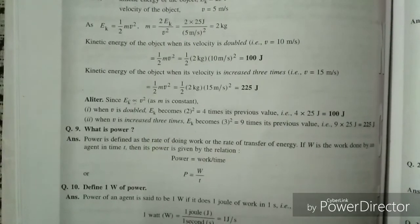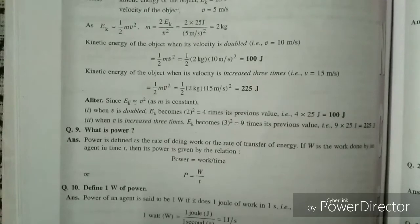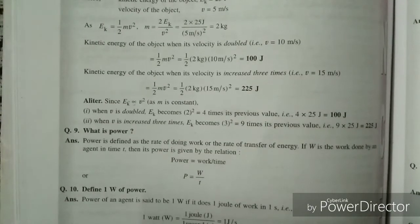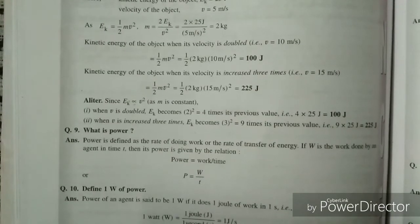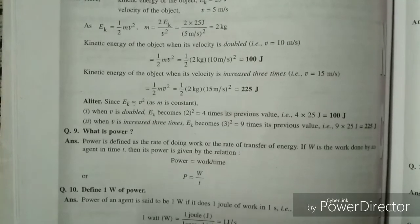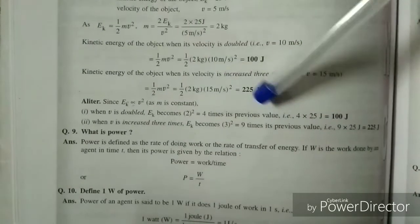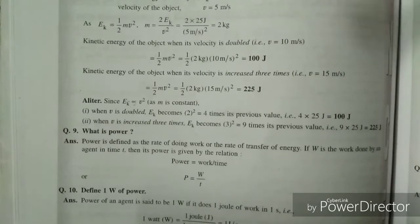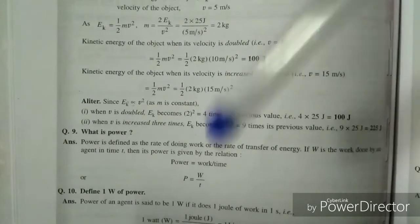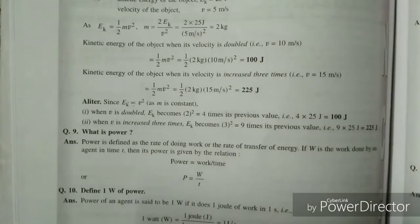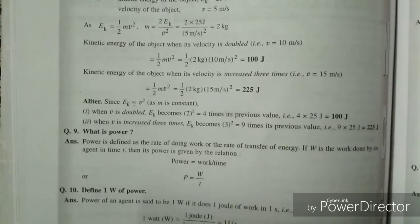Next question: what is power? Power is defined as the rate of doing work or the rate of transfer of energy. If W is the work done by an agent in time t, then its power is given by: power equals work upon time, or power equals energy upon time. So P = W/t.